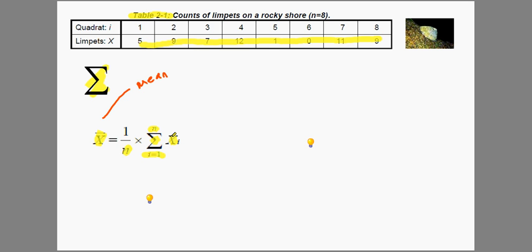Well, that may not help too much. X here stands for an observation. And i is a counter that goes from 1 to however many observations we have, which in this case is 8.